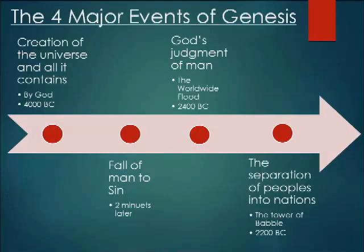The next major event is the judgment of man, 1,600 years later in 2400 BC, with the worldwide flood — Noah's flood. Everyone in the world, their thoughts were evil continually. But Noah found favor in God's eyes — Noah, his three sons Ham, Shem, and Japheth, and their wives. God judged the world with a worldwide flood but provided a way of salvation — the ark. It took 100 years to build, and Noah preached the whole time, but nobody listened. They went on the ark, closed it up, the world got judged, and they came out. God told them to spread out and populate the earth.